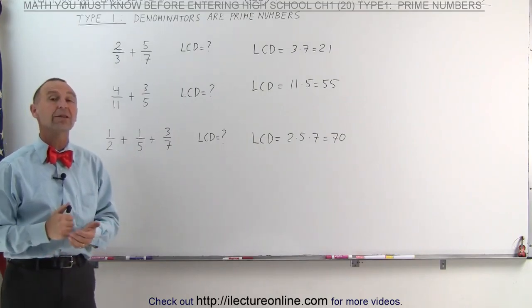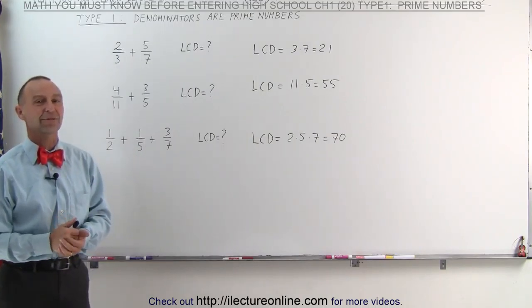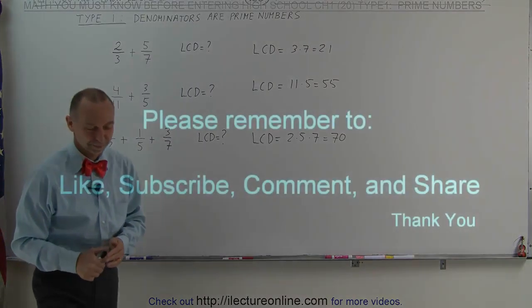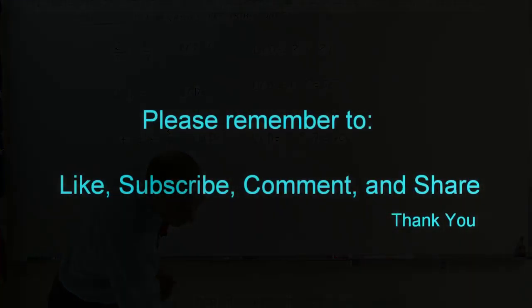Later on, we will then show you how to actually add the fractions together once we found the lowest common denominator. But here we have the technique, number one. When the denominators are prime numbers, we simply multiply the denominators together. And that's how it's done.